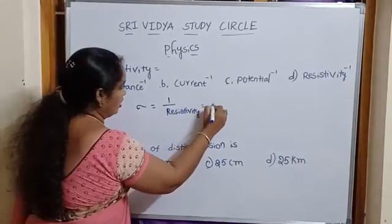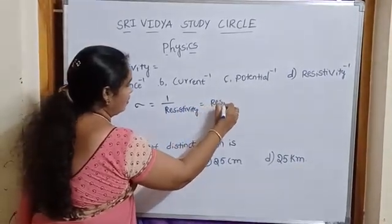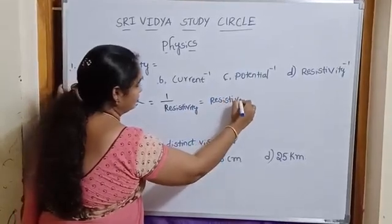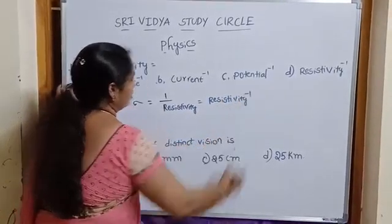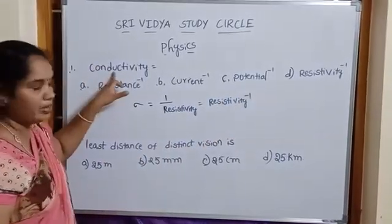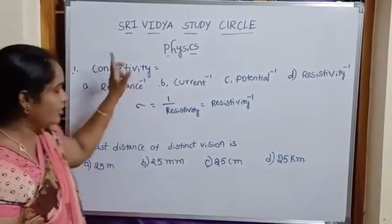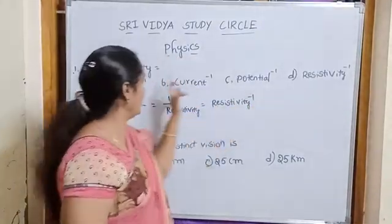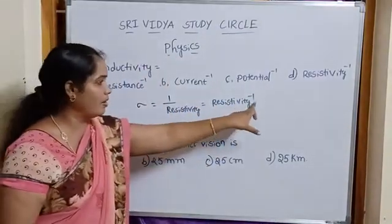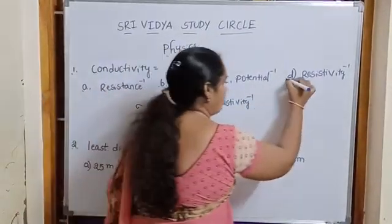Conductivity is equal to resistivity power minus 1. Conductivity means current flowing through the substance, then it opposes resistivity. Conductivity is equal to resistivity power minus 1. Then select option D.